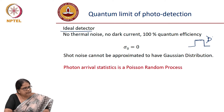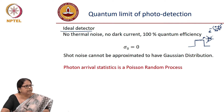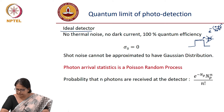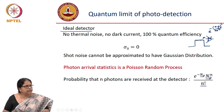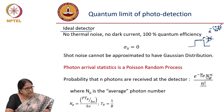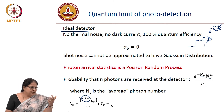The photon arrival statistics follows a Poisson random process. For a Gaussian, the distribution is e^(-(x-μ)²/2σ²), where μ is the mean and σ² is the variance. But for a Poisson process, the distribution is given by e^(-N_p) × N_p^N / N!, where N_p is the average photon number. The number of photons in a bit slot is calculated as: N_p = P × T_b / hν, where P is the peak power and T_b is the bit duration.